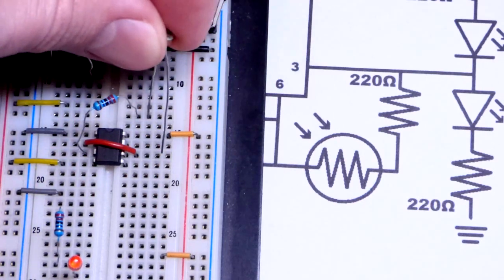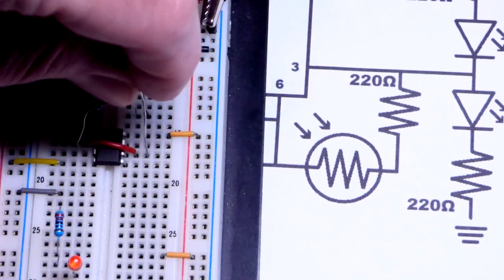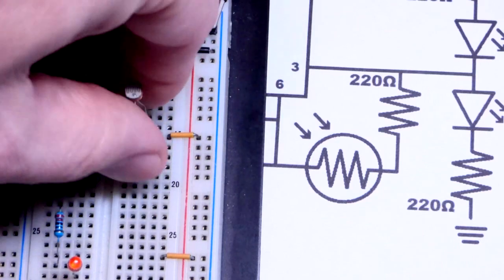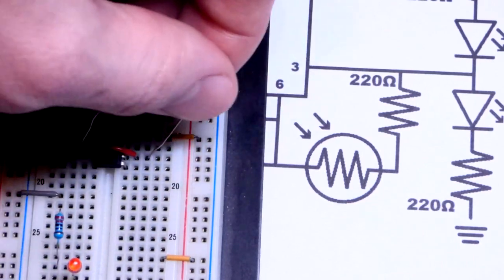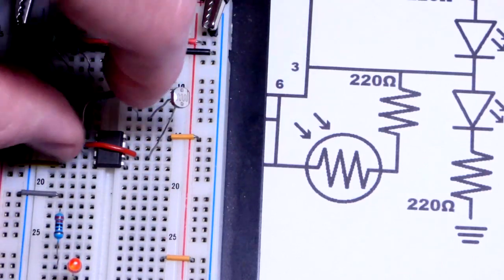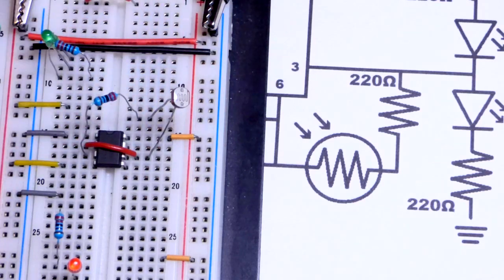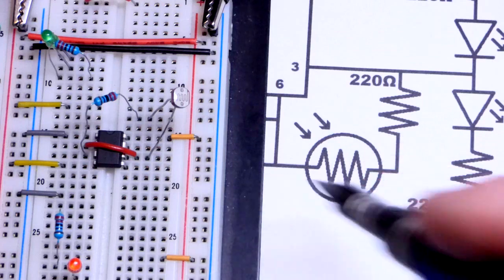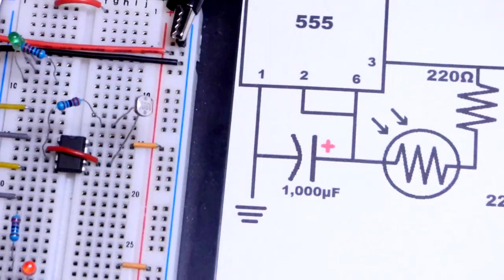And grab the light-dependent resistor, put it in series. So their resistances will add up. And they really don't want to go into the slots today. There we go. We got that. Their resistances will add up based on how much light is going across them.